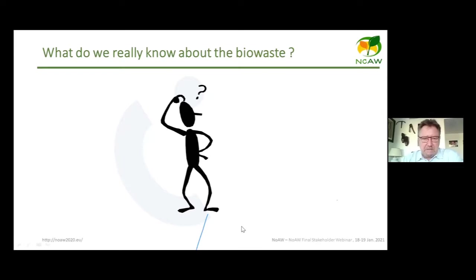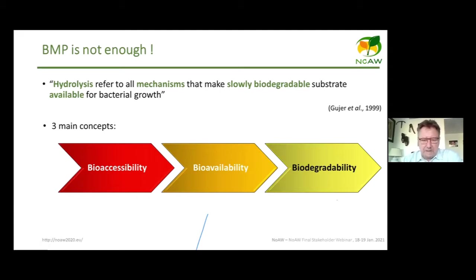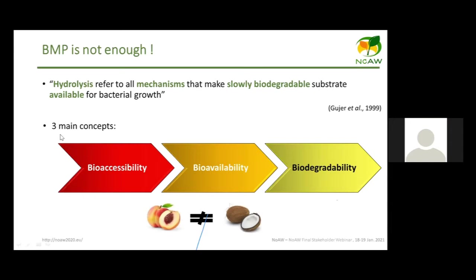What do we really know about bio-waste and biochemical methane potential (BMP)? The first step in anaerobic digestion is hydrolysis — all mechanisms that make slowly biodegradable substrates available for bacterial growth. Behind this are three key concepts: bioaccessibility, bioavailability, and biodegradability. Even if waste is biodegradable, it may not be easily bioaccessible or bioavailable. For example, comparing a peach to a coconut — the hard outer shell of the coconut makes it far less bioaccessible to bacteria.